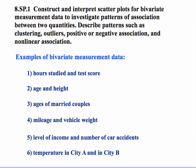Some examples of bivariate measurement data contexts include: whether hours studied relates to test scores; whether age relates to height; whether the ages of married couples are related; whether vehicle weight relates to gas mileage; whether driver income level relates to car accidents; and whether the daily high or low temperatures of two different cities are related.